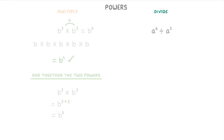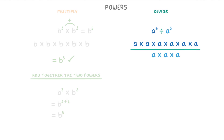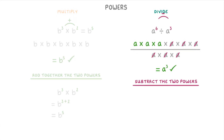It works in a pretty similar way for division. a to the power of six divided by a to the power of three really just means six a's multiplied together. And then to simplify that, we can just cancel our a's on the top and the bottom until we find that we'd only have three a's left on the top, which tells us that our answer is a cubed. Again, there is a quicker way to do this, which when we're dividing is to subtract the two powers. So for a to the power of six divided by a to the power of three, we just write a to the power of six minus three, which equals a cubed.